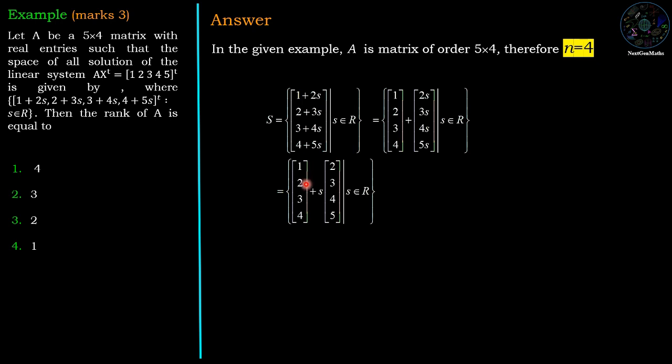So this solution has two parts: one is a constant vector, the second vector is a multiple of S. The second vector, which is a multiple of S, is a solution of the homogeneous system AX transpose equals 0. Therefore it will generate the null space of A, and the nullity is nothing but the dimension of the null space of A.